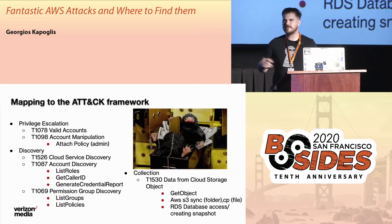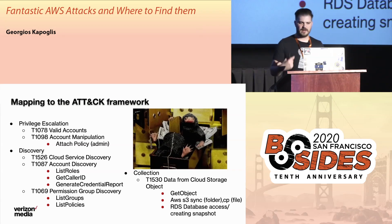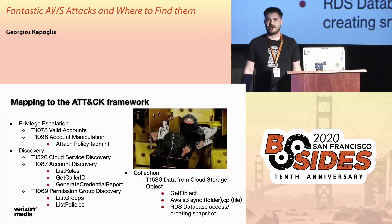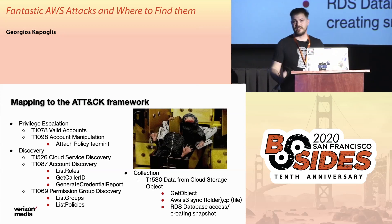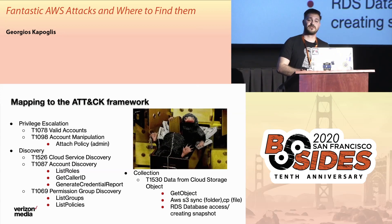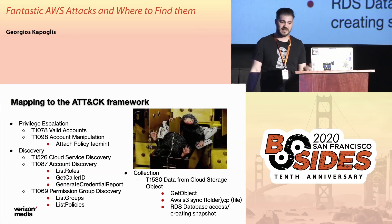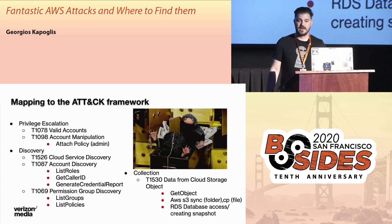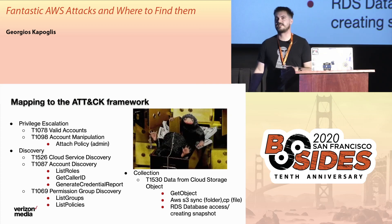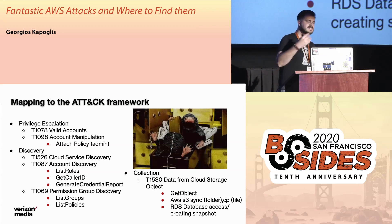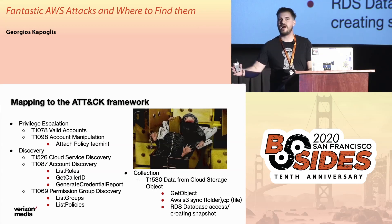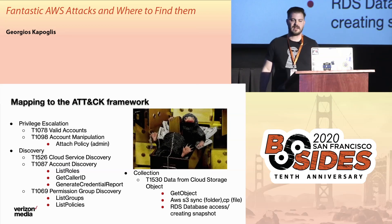Privilege escalation overlaps a bit with persistence and uses similar techniques. We talked about discovery, and lastly, exfiltration — the goals of the attacker. They could want a crypto mining service on your AWS account costing you money. But something we look for is if the attacker gets access to a role with access to confidential S3 buckets — they might try to exfiltrate those files. We're going to see how we can catch that.